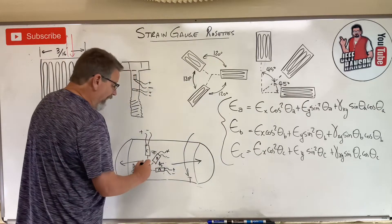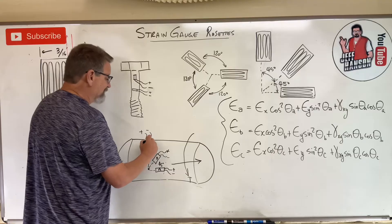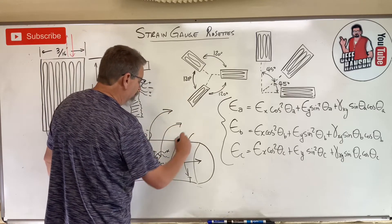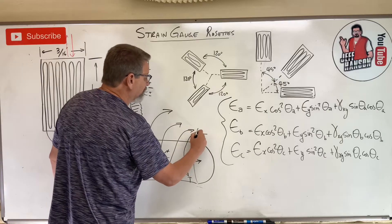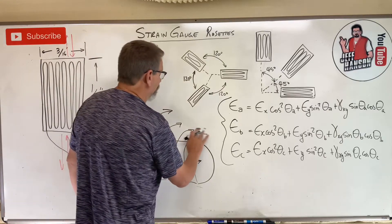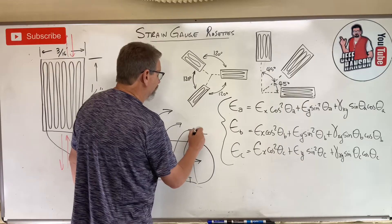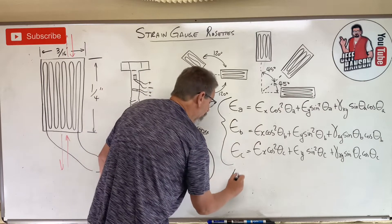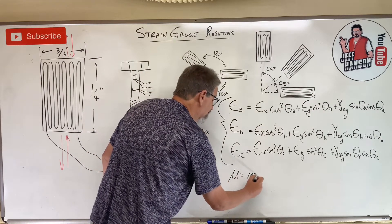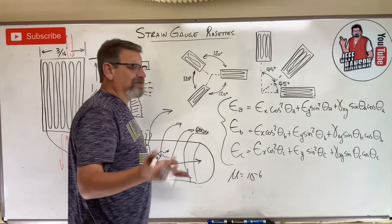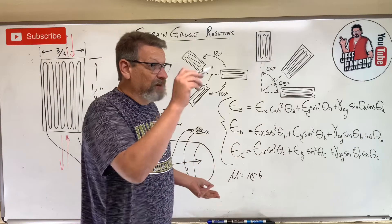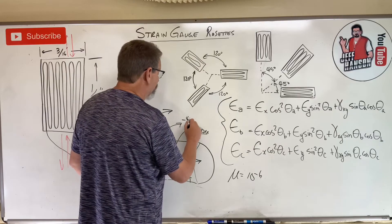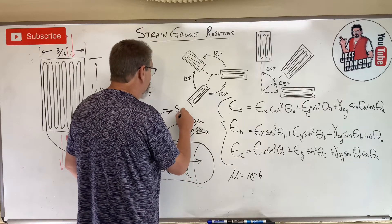So each one of these strain gauges is going to output you some kind of number. Let's make up a number. This one says it's 600 micro strains. Remember, micro is equal to 10 to the minus 6, and remember strain doesn't have any units - it's like millimeters over millimeters. Let's say this one's negative 450 micro and this one's 500 micro strains.